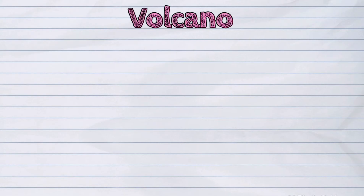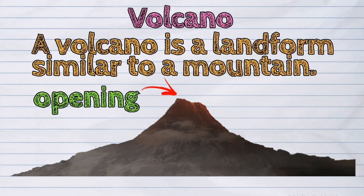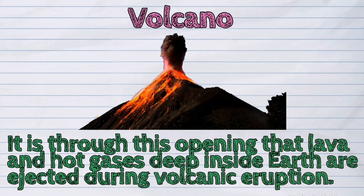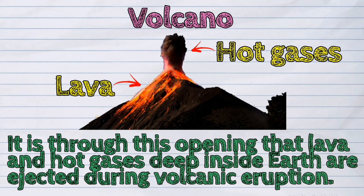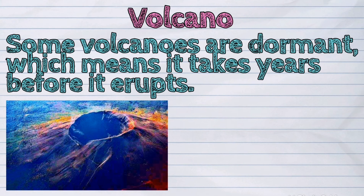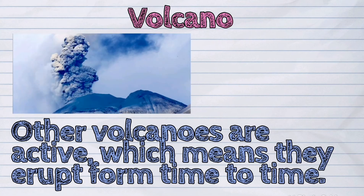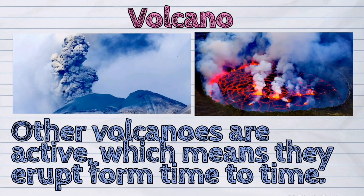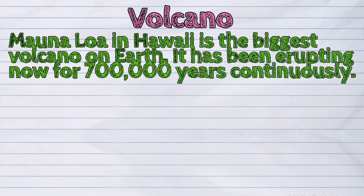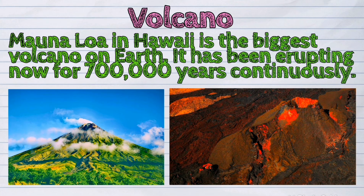Next is the volcano. A volcano is a landform similar to a mountain. The difference is that a volcano has an opening. It is through this opening that lava and hot gases deep inside Earth are ejected during a volcanic eruption. Some volcanoes are dormant, which means it takes years before they erupt. Other volcanoes are active, which means they erupt from time to time. Mauna Loa in Hawaii is the biggest volcano on Earth. It has been erupting for 700,000 years continuously.